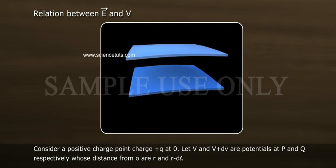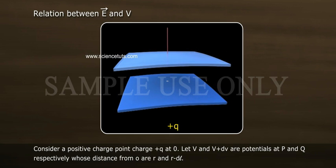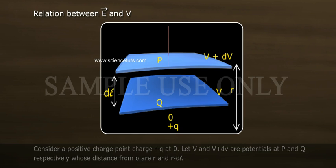Relation between E bar and V. Consider a positive point charge plus Q at origin O. Let V and V plus dV are potentials at P and Q respectively whose distances from O are R and R minus dL.